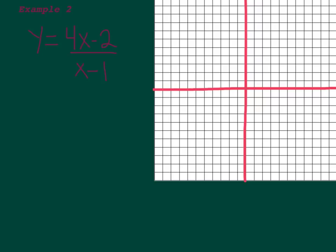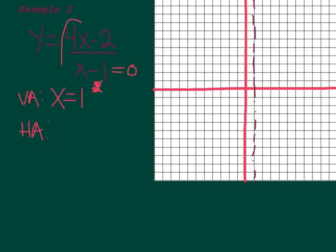Now we're going to graph y equals 4x minus 2 over x minus 1. First, figure out the vertical asymptote. Because the bottom can't be 0: x minus 1 equals 0, so x equals 1. Vertical asymptote at x equals 1, because if x was 1 you'd be dividing by 0. Sketch that in the graph at x equals 1. Then for the horizontal asymptote, whenever you have linear on top and bottom, take the ratio: 4x over 1x would be 4 over 1, so y equals 4. So put the horizontal asymptote through y equals 4.